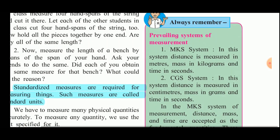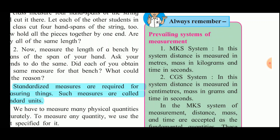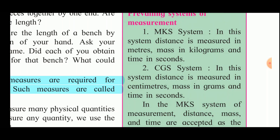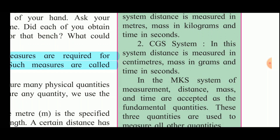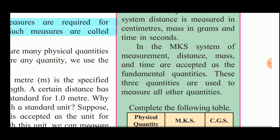There are two prevailing systems of measurement. In the MKS system, M stands for meter, K for kilogram, and S for second — distance is measured in meters, mass in kilograms, and time in seconds. In the CGS system, distance is measured in centimeters, mass in grams, and time in seconds. In the MKS system, distance, mass, and time are accepted as the fundamental quantities, and these three are used to measure all other quantities.